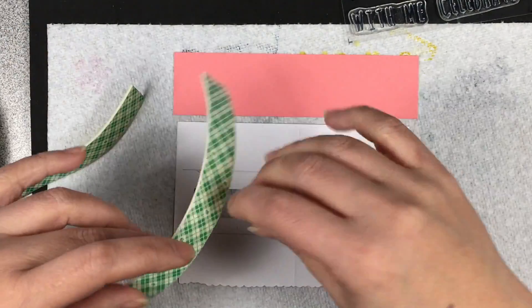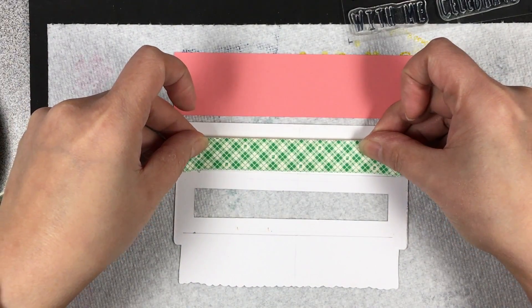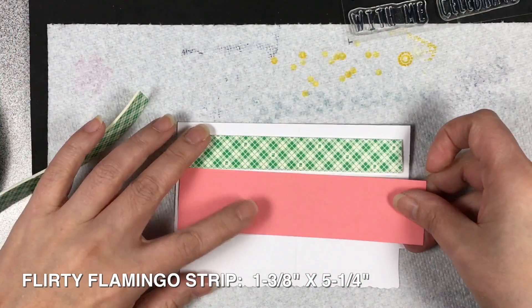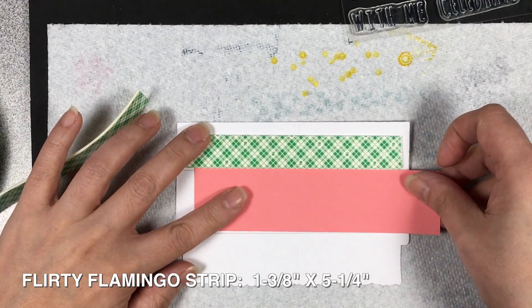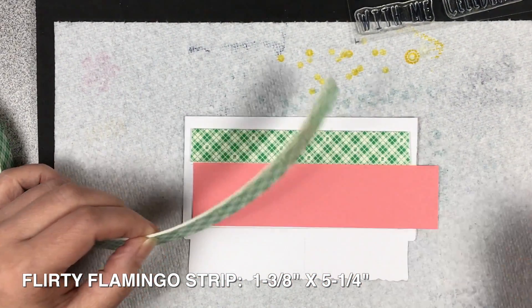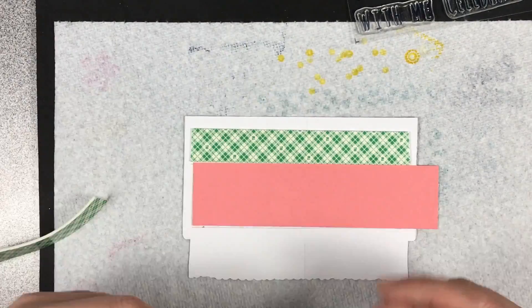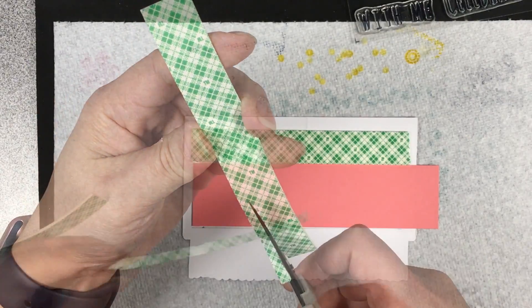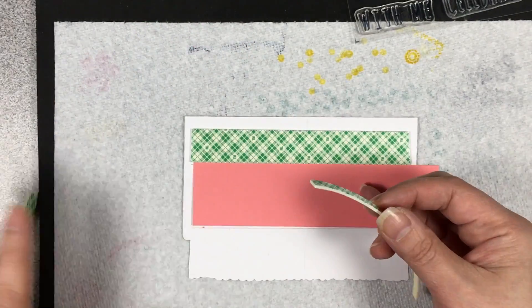I did mark off a quarter inch above and below the rectangular window. This will serve as a guide so that your foam adhesive tape will be placed nice and straight. The panel that I've cut out in Flirty Flamingo is actually cut at one and three-eighths by five and a half inches.